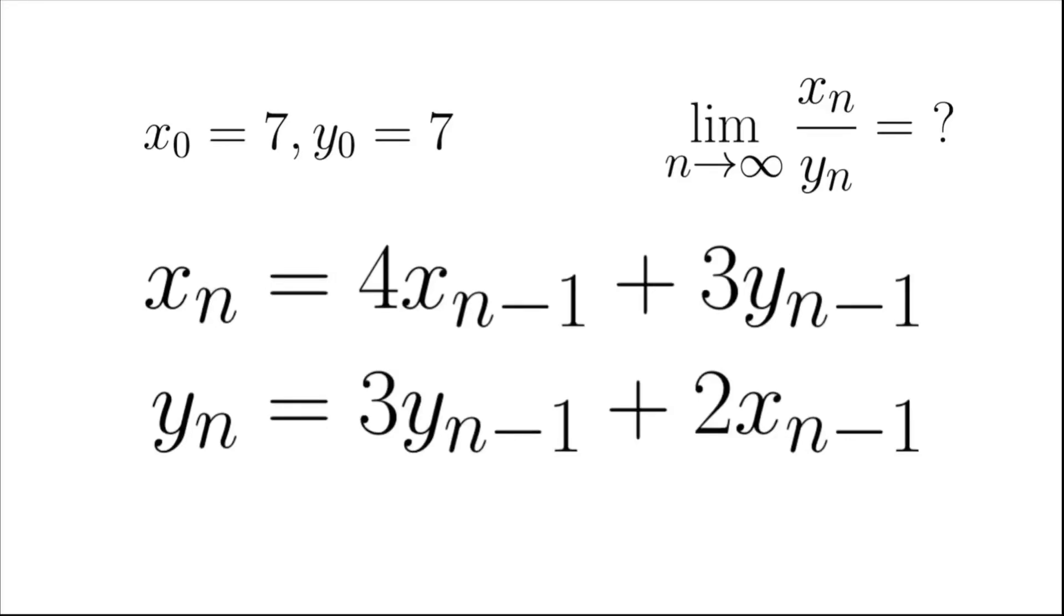Let's take a look at this problem. Here we have two sequences, x and y. The starting terms of the two sequences, x0 and y0, are both 7.